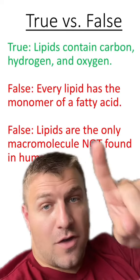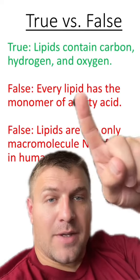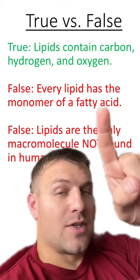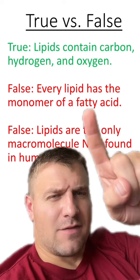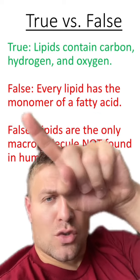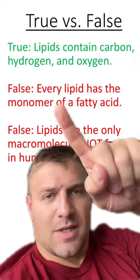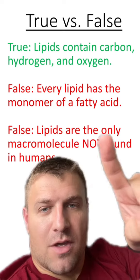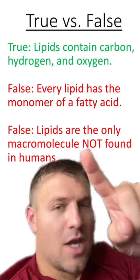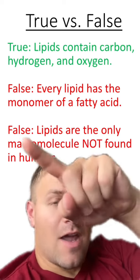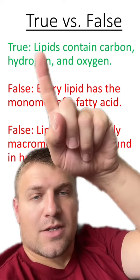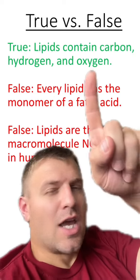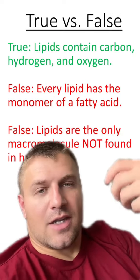In this one, there are two false statements. Every lipid has the monomer of a fatty acid — that's not true. Steroids are considered lipids but they don't contain fatty acids, so there isn't one true monomer of a lipid because there are some exceptions. And lipids are the only macromolecule not found in humans? Absolutely not — there are tons of lipids found in humans. The only statement that is true is that lipids do contain carbon, hydrogen, and oxygen, just not in the same ratio as in carbohydrates.